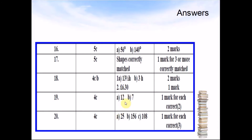Question 19: answer was 12. B was 7. Question 20: A was 25. B was 156. C was 108.